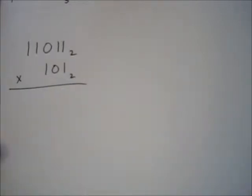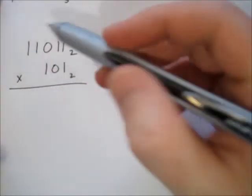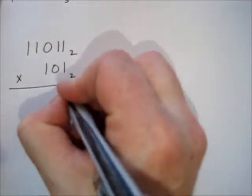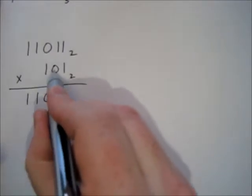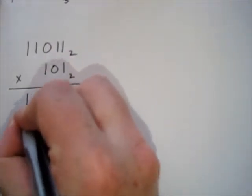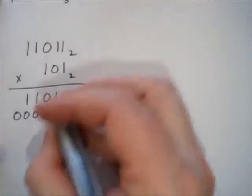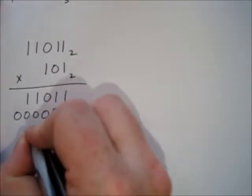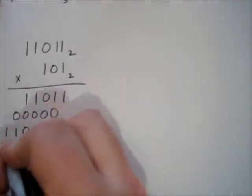It doesn't matter what base you're in: if you multiply by one you get exactly what you're multiplying; if you multiply by zero you get zero. So multiplying all this by one gives one-one-zero-one-one. The next digit is zero, so we get a whole row of zeros. Then we're multiplying by one again: one-one-zero-one-one.